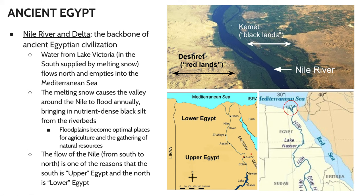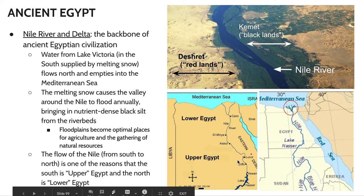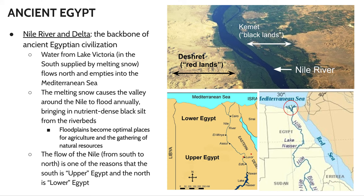As we saw with ancient Mesopotamia, these ancient civilizations are heavily reliant on massive waterways for the vitality and well-being of these emerging nations and cities and states. The Nile River is basically the backbone, almost literally, of ancient Egyptian civilization. Water from Lake Victoria, which is in central Africa and is supplied by melting snow, flows northward down the Nile River and then into the Mediterranean Sea.